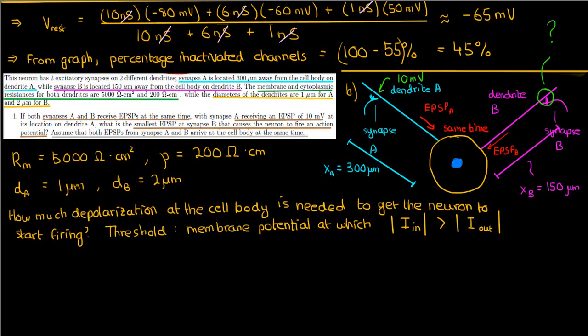Currents represent the flow of positive charge, so an inward current means sodium ions flowing into the cell. When inward current exceeds outward current, the neuron enters a positive feedback cycle: more positive charge enters, voltage rises, more sodium channels open because they open when voltage goes up, even more positive charge enters, voltage rises further, and the cycle continues until an action potential is generated.